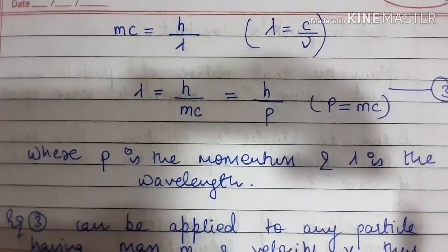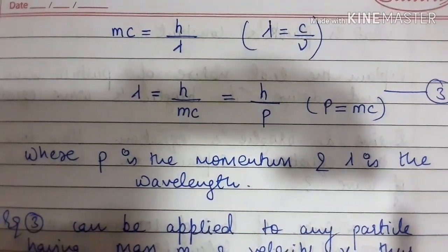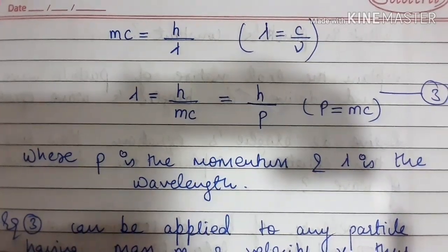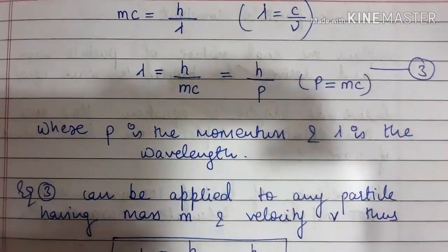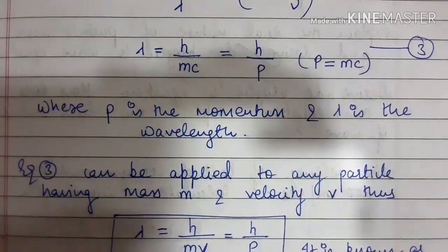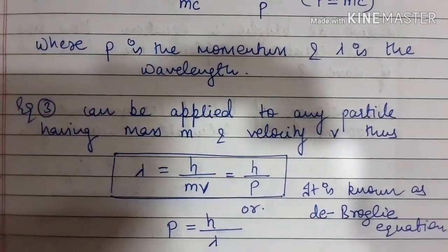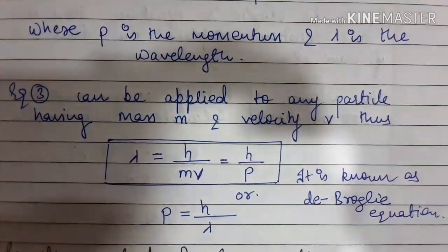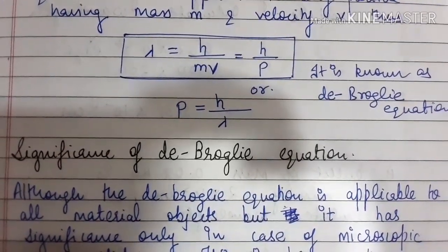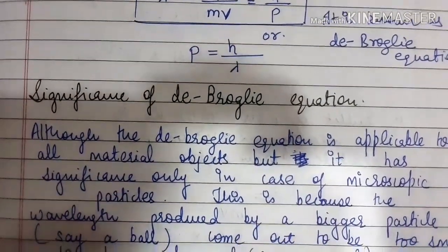In the case of the electron it is written as c, but if we take it as a particle we can write it as v, where p is the momentum and λ is the wavelength. This equation can be applied to any particle having mass m and velocity v. Thus this equation is known as the de Broglie equation: λ = h/mv.